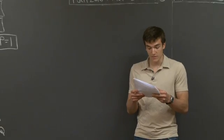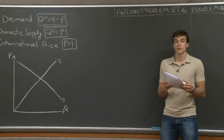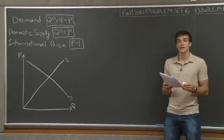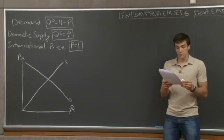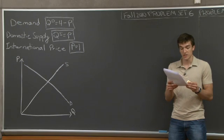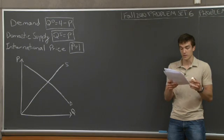Moldavia is a small country that currently trades freely in the world barley market. Demand and supply for barley in Moldavia is governed by the following schedules. The demand is given by quantity demanded equals 4 minus p. The supply is given by quantity supplied equals p, and the world price of barley is $1 per bushel. Part A asks us to calculate the free trade equilibrium price and quantity of barley in Moldavia, how many bushels they import or export, and on a well-labeled graph depict this equilibrium situation and shade the gains from trade relative to the autarkic no-trade equilibrium.